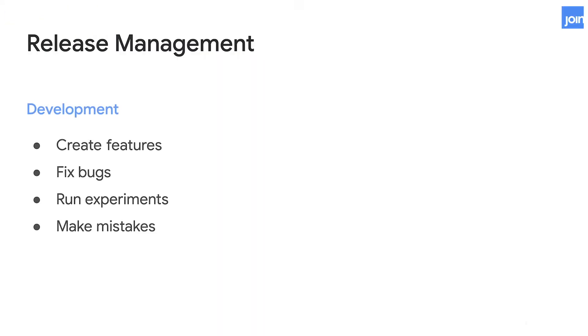Before we jump to Looker, it's helpful to understand how release management is done in traditional software development. Best practice in system administration advises isolating the various activities occurring concurrently in at least three separate environments. Development is where developers commit code, conduct experiments, fix bugs, and of course, make mistakes.